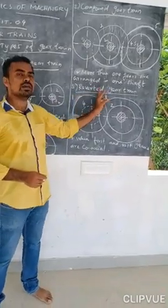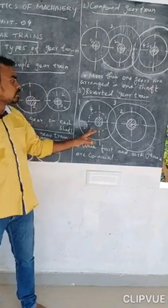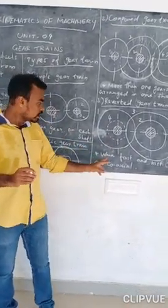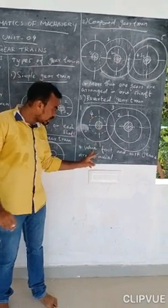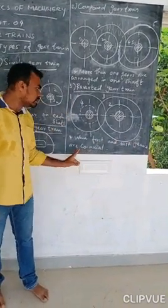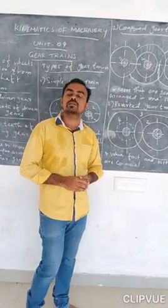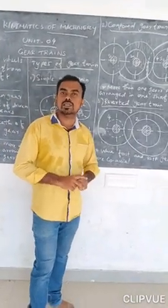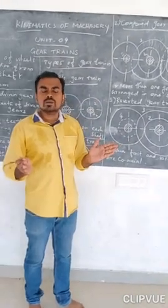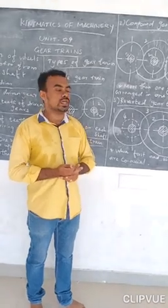The third type is the reverted gear train. In a reverted gear train, the first and last gears are coaxial, meaning they share one common axis. So the first gear and the last gear are on the same axis.